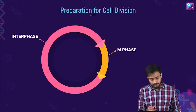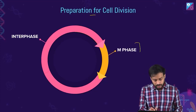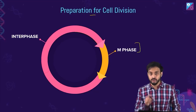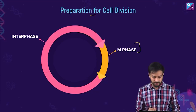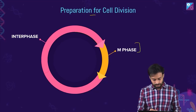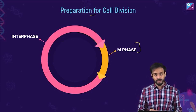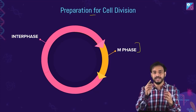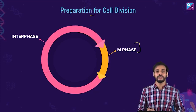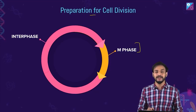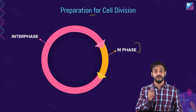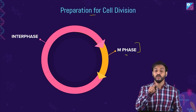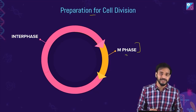Interphase and the M phase — two major phases. The actual division, meaning one cell forming two cells, happens in the M phase, not in the interphase. So what happens in the interphase? Let's talk about that.